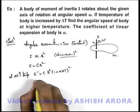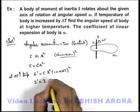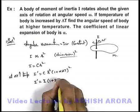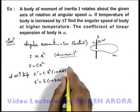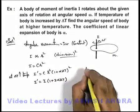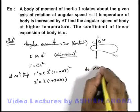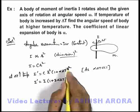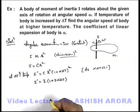So we can write the new moment of inertia is equal to the earlier one multiplied by (1 + 2αΔT), as I can use binomial here, as αΔT is very very less than one. I can take this power, so it'll be the new moment of inertia.